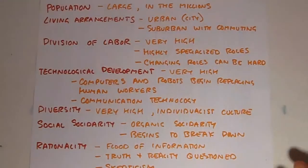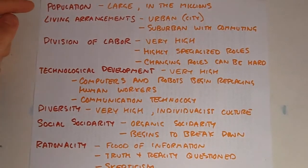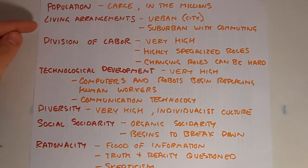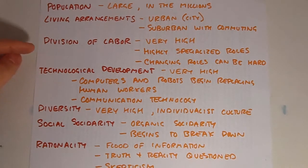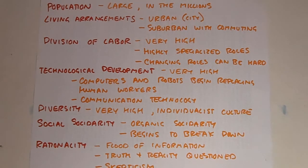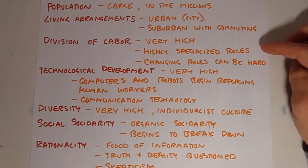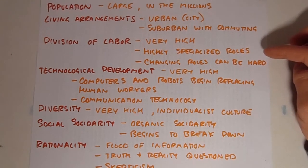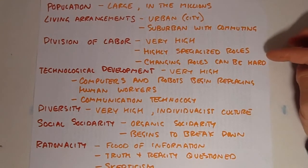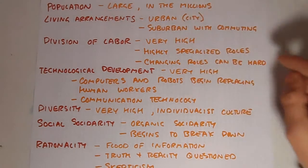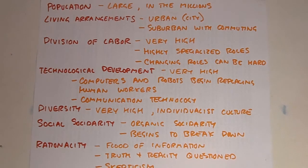Going back to our standard list of characteristics: the population of postmodern societies is large, usually in the millions. Living arrangements are usually urban, sometimes suburban with people commuting into the city for work. That connects to division of labor. Durkheim argues that the jobs people do create their place in culture. When people all do the same kind of work, they have a more homogenous culture. In a postmodern society, the division of labor is very high with highly specialized roles, so each individual is very different from another. This is increased when people live in the suburbs and commute into the city, further disconnecting them from the city environment.